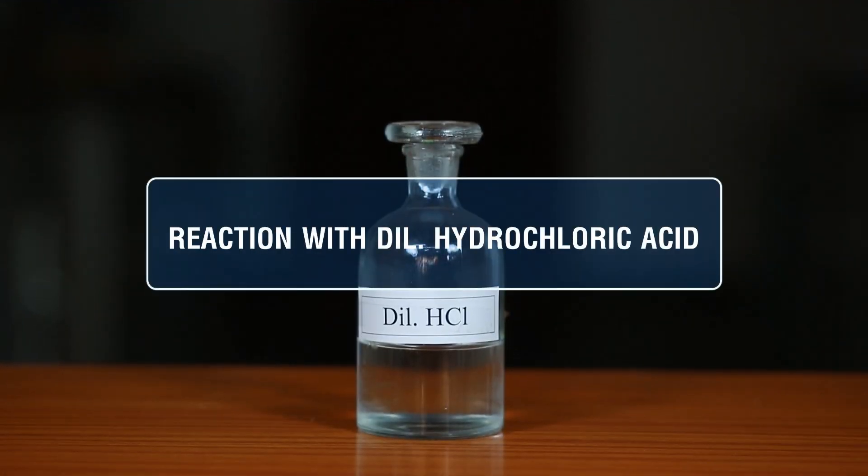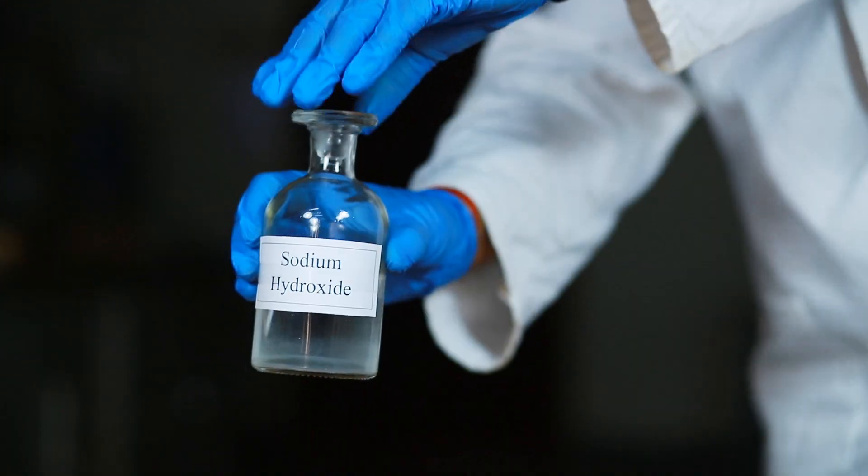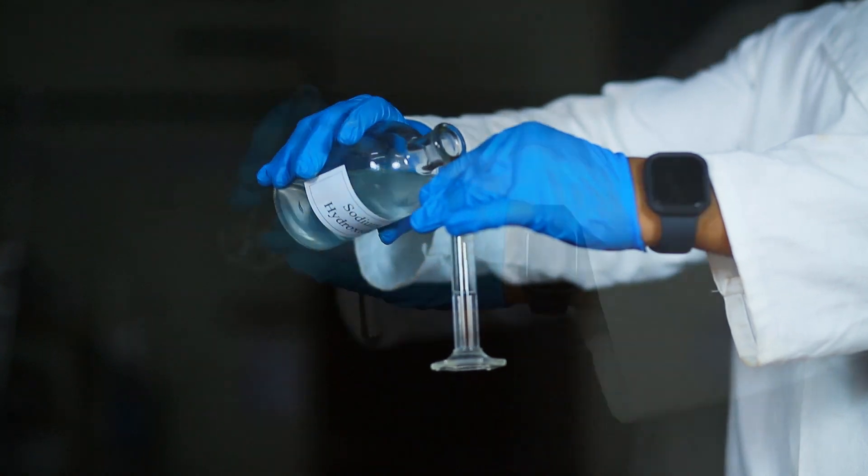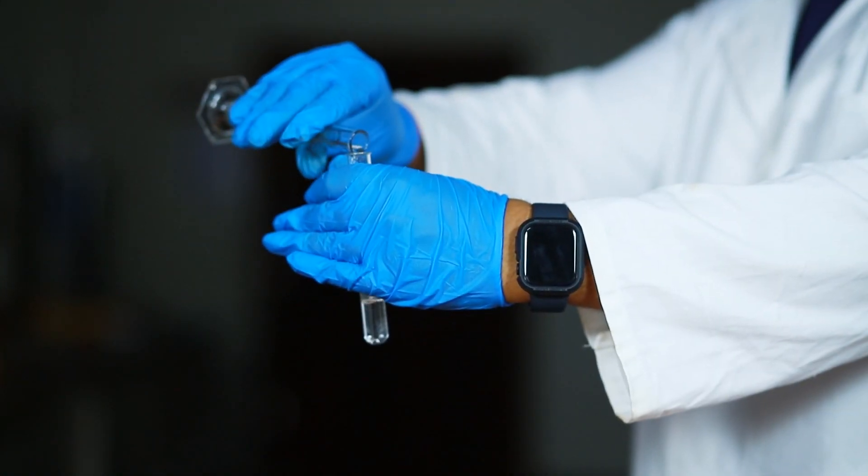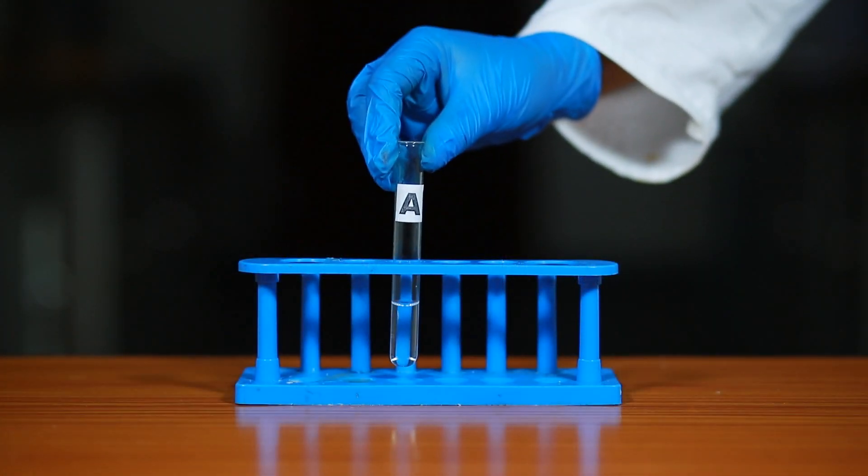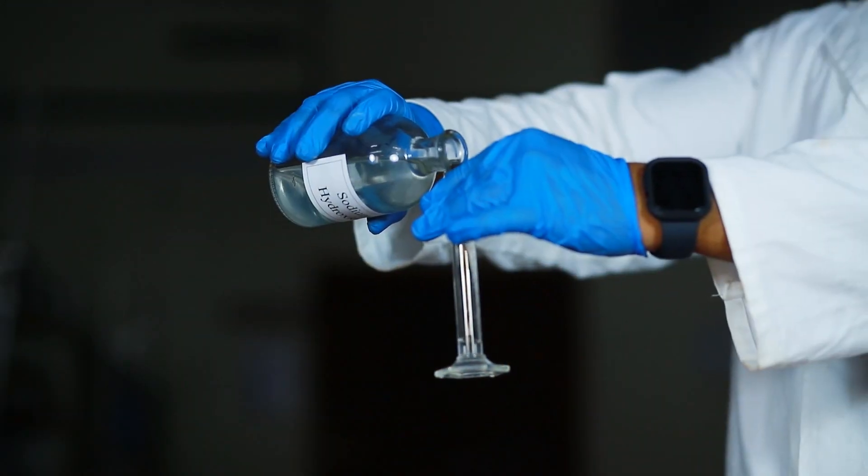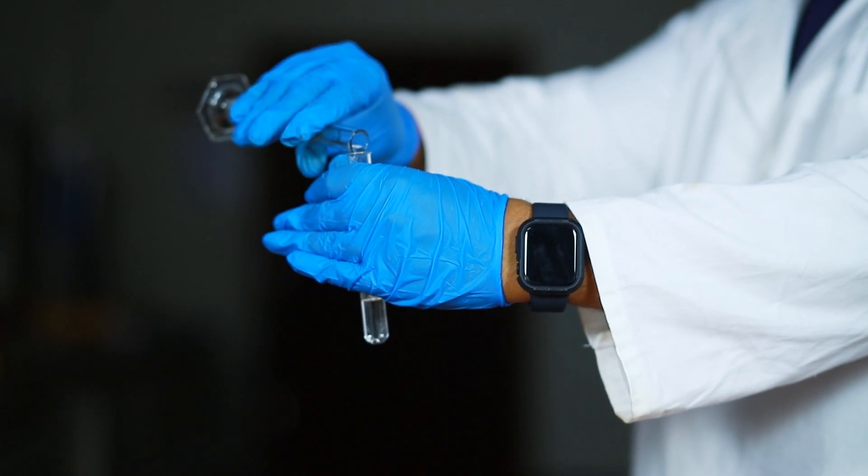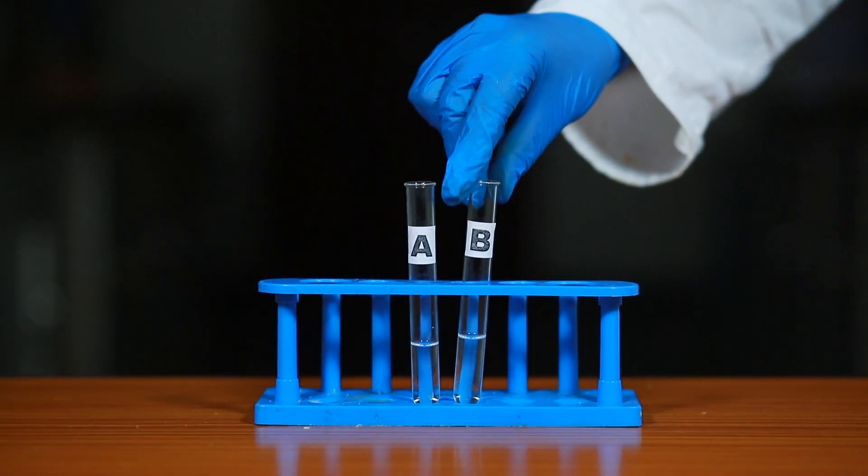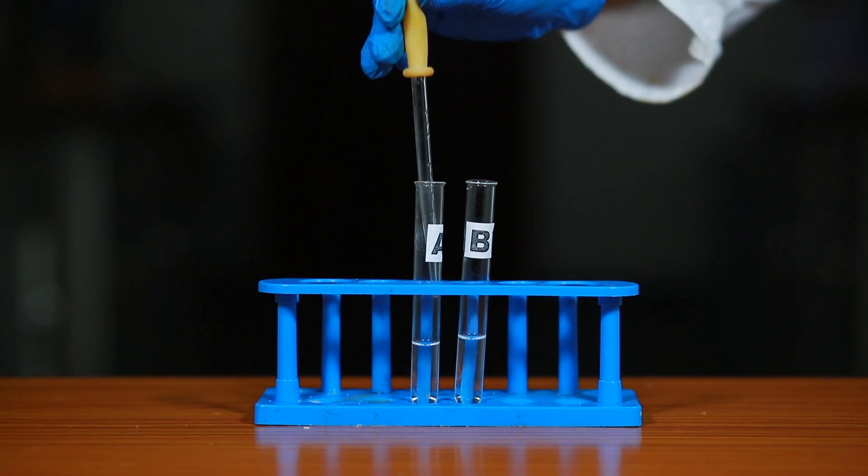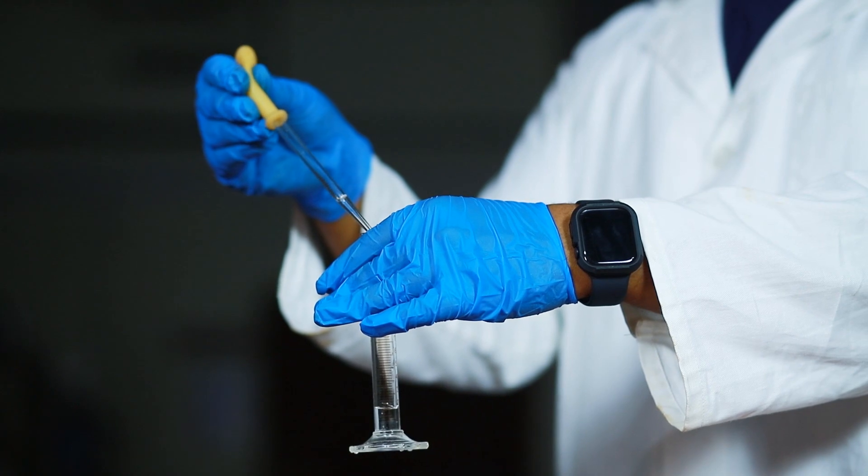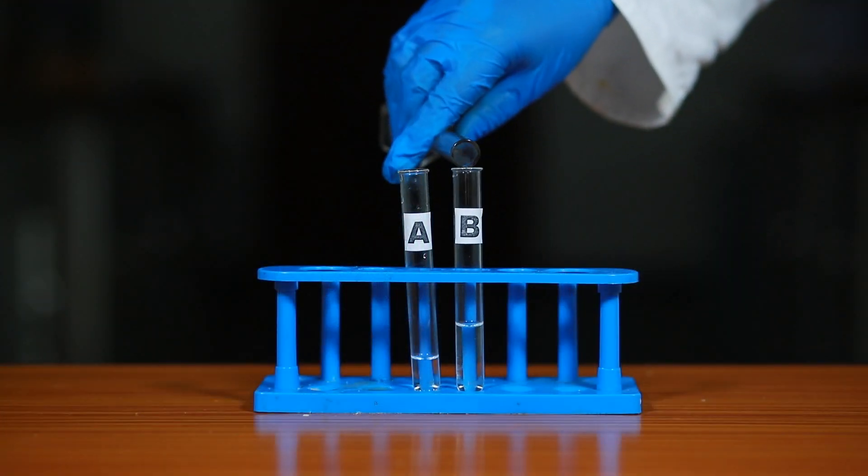Reaction with dilute hydrochloric acid. Take 5 ml of dilute sodium hydroxide solution in a measuring cylinder and pour it in a test tube and label it as A. Similarly, take 5 ml of dilute sodium hydroxide solution in another test tube and label it as B. Add dilute HCl, 2 ml from test tube A, dropwise to dilute NaOH contained in test tube B.